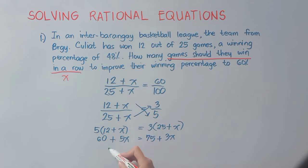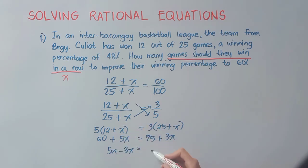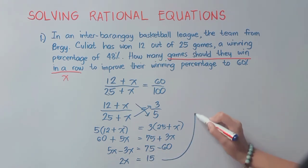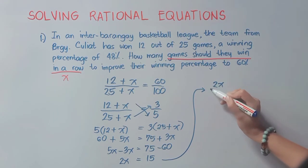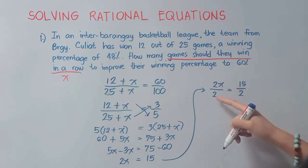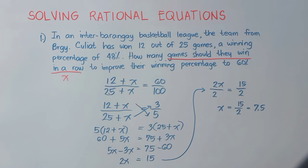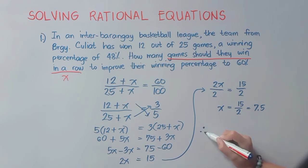Distributing: 5 times 12 is 60, 5 times x is 5x, equals 3 times 25 is 75, plus 3x. Place all variables on the left: 5x minus 3x, and constants: 75 minus 60. So 2x = 15, divide both sides by 2: x = 15/2 = 7.5. Since there is no 7.5 value for games, we round to 8. Therefore, Barangay Culiat should win 8 games in a row to improve their winning percentage to 60%.